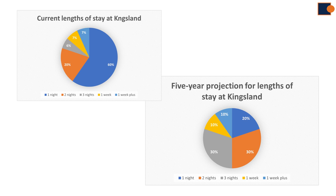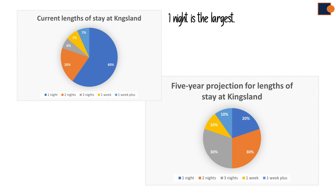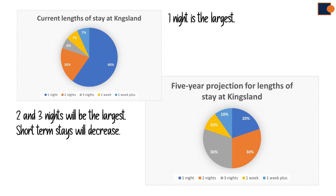Let's sum up. Comparisons: the biggest is one night in the first chart, two and three nights in the next. Main changes: short-term stays are becoming smaller while longer ones are becoming bigger. And this is an unusual trend as well.